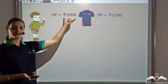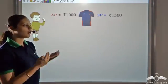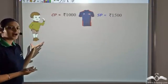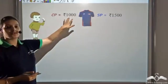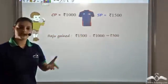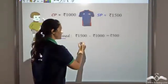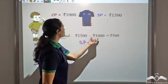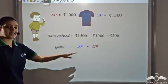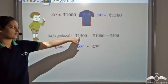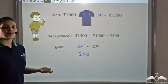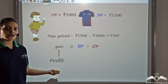Raju had just 1000 rupees with which he bought this t-shirt, but he got back 1500 rupees. So now he has 500 rupees more — that is, Raju gained 1500 minus 1000. So the gain is SP minus CP, which is 1500 minus 1000, giving us 500 rupees. This gain is what we call profit.